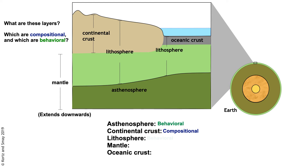The lithosphere is a behavioral layer — it's the solid, rocky, outer part of the earth that behaves in a brittle manner. The mantle is also, like the continental crust, a compositional layer, characterized by having a certain chemical composition. And oceanic crust is compositional too.